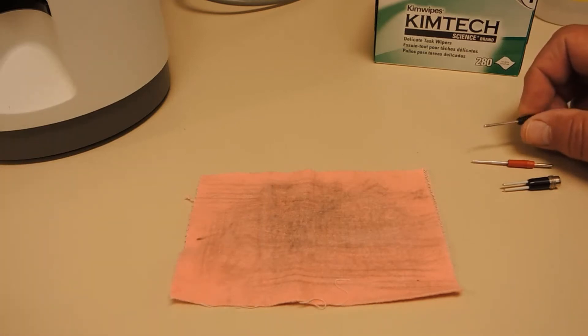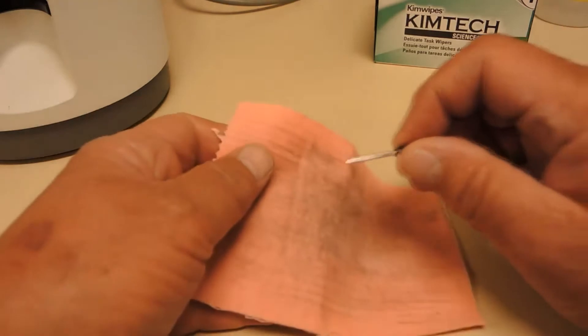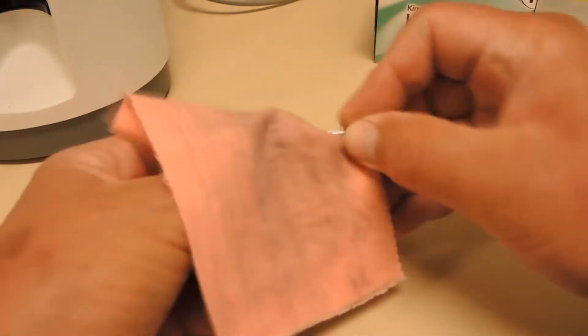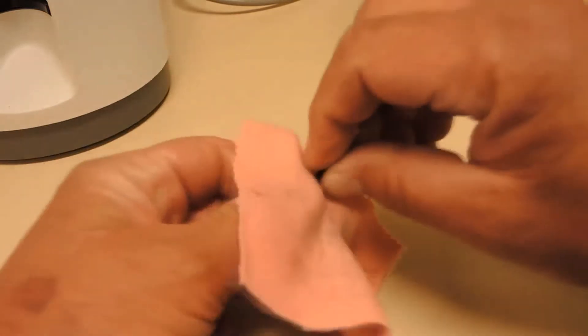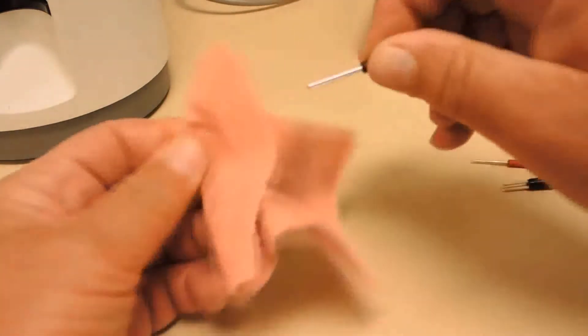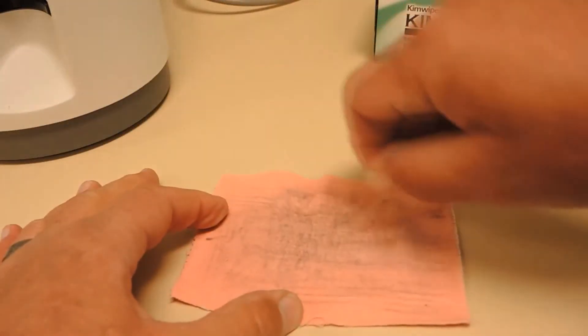First thing you want to do is clean the electrodes on the silver cleaning cloth. With the red and black electrodes I just wrap the cloth around them and pull them through the cloth, and you can clean the ends off as well by dragging it along the cloth.